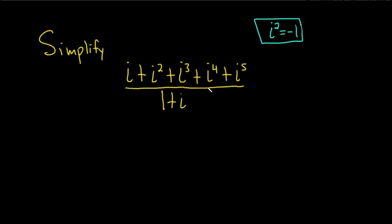So let's go ahead and start by writing this down and simplifying as much as we can by using this fact. So we have i plus i squared plus i cubed plus i to the fourth plus i to the fifth, and that's all being divided by 1 plus i.